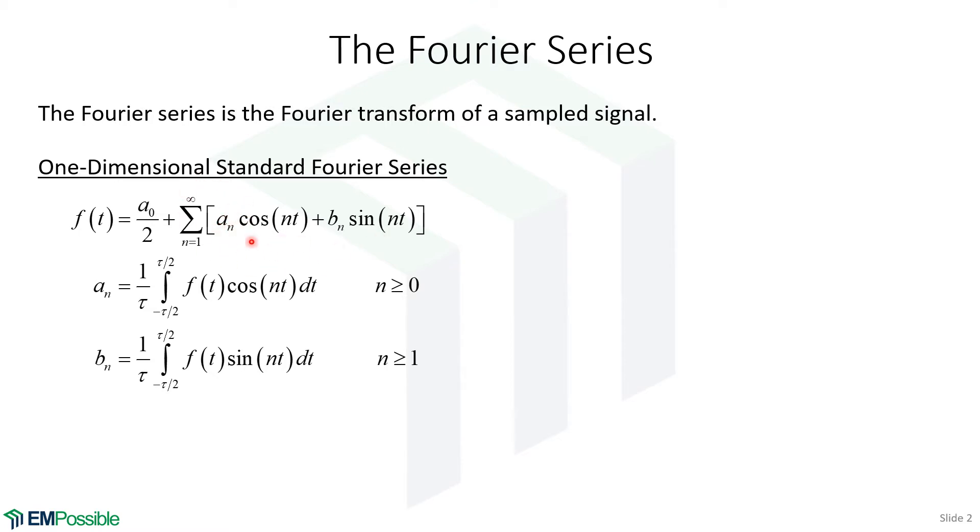We have these A coefficients multiplying cosines and B coefficients multiplying sines. We also have this DC component sitting out here. And here's how we calculate the A and B coefficients.